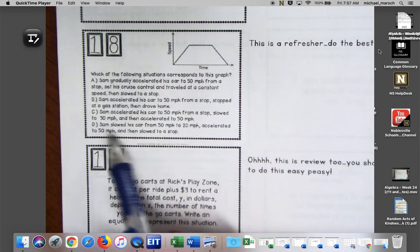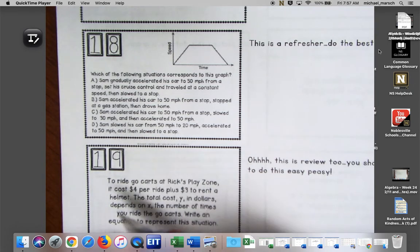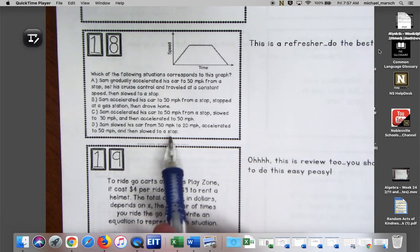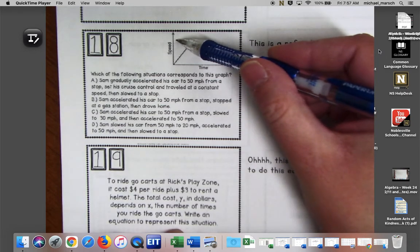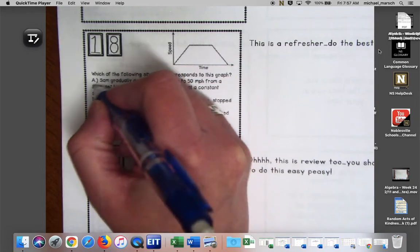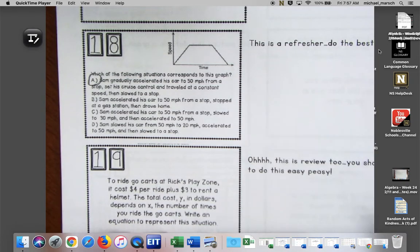Sam accelerated his car to 50 miles per hour from a stop, stopped at a gas station. Nope, if he stopped at a gas station he would have gone right back down to no speed, so B is a no. Sam accelerated his car to 50 miles per hour from a stop, slowed to 30, then accelerated. No, that would be like up, down, up. Sam slowed his car down from 50 miles to 20 miles. We know that's not it because if he slowed his car down he would have been up here and he would have gone down. I think we're gonna have to say it's a solid A.